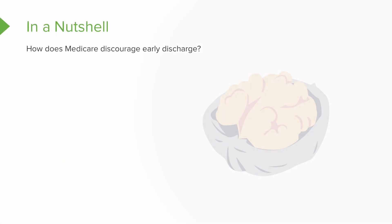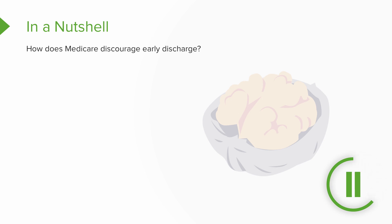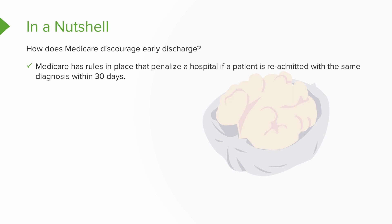DRGs are by far the most important cost control and quality improvement tool that governments and private payers have implemented. In thinking of everything that we've discussed today, consider this question: How does Medicare discourage early discharge? Medicare has rules in place that penalize a hospital if a patient is readmitted with the same diagnosis within 30 days.